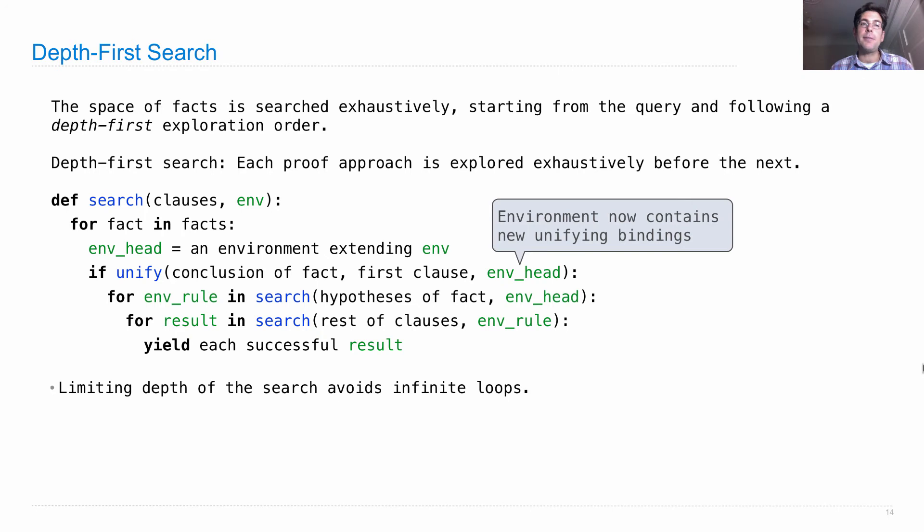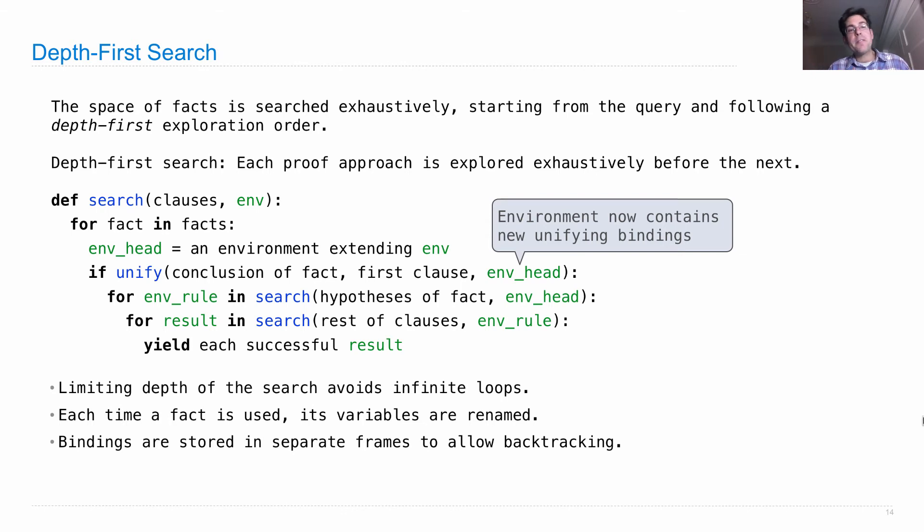Now, there's a few details I've left out. We limit the depth of the search so that we don't recurse forever. Each time a fact is used, we use it with a different set of variable names so that we don't confuse multiple occurrences of the same recursive rule as being somehow related, because those variables are local to a particular rule. And finally, bindings are stored in separate frames to allow backtracking. So there's this one part where we have to make sure that if our search is unsuccessful with a fact, we can go back and try a different fact. And the way we do that is we start off with a new frame so that we don't get confused about which factors which. So that's the whole story.